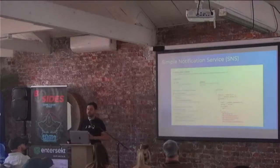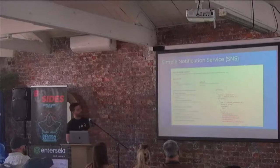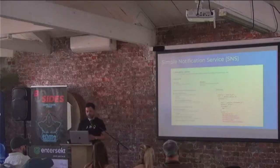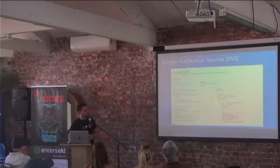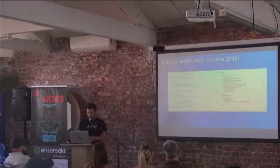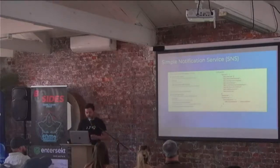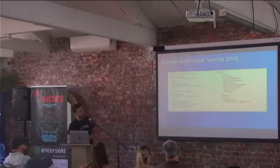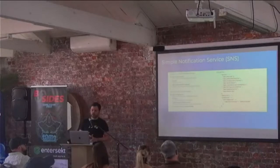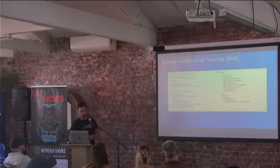When you're creating an SNS topic from the console, these are the access policy options you're given. With the basic options, you have very limited choices: only the topic owner, everyone, or only specified AWS accounts. If we look at 'only the topic owner,' the only way to really see what that means is to look at the policy on the right. It has permissions like publish, remove permissions, set topic attributes, and so on — and any resource within this account can perform those actions by default. This is the default option that's checked, so this policy is permissive by default.